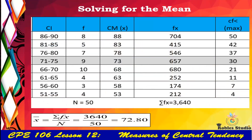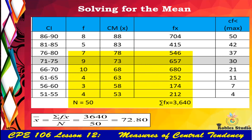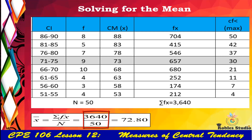How do we solve for the mean? First, we solve for the class midpoint (CM), represented by X. We then solve for FX by multiplying the frequency 8 with the CM of 88, giving a result of 704. We repeat the same with the other rows. Finally, we solve for the summation of FX by adding them all, which gives 3640. We also compute the cumulative frequency (CF) starting from 4 at the bottom, then adding rows until we reach 50. We then substitute into the formula: 3640 divided by 50, giving a mean of 72.80.